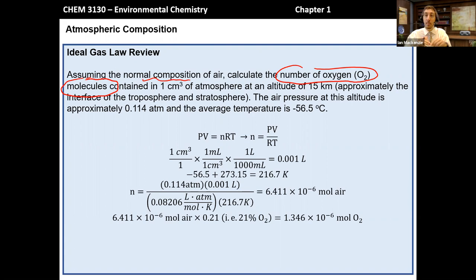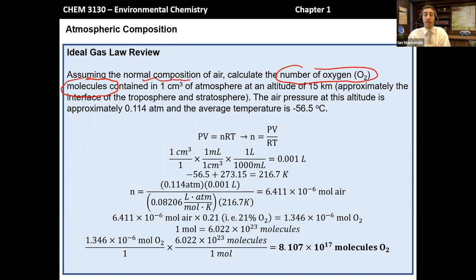Reach way back into general chemistry and remember that the relationship between moles and molecules, really the definition of a mole, is using Avogadro's number, which is 6.022 times 10 to the 23rd molecules. So now that I have this relationship between moles and molecules, I can take the number of moles, multiply it by 6.022 times 10 to the 23rd molecules per mole. And I come out with 8.107 times 10 to the 17th molecules of O₂ are contained in a single cubic centimeter at an altitude of 15 kilometers. Hopefully that's a good refresher on the use of the ideal gas law.